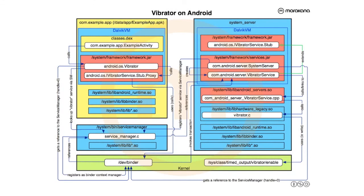Here we have two different processes: an example application on the left and the system server on the right, and down below we have a kernel with a couple of drivers exposed to us. This application wants to vibrate the device — maybe because of a notification, although in that case it would go through the notification service. But let's assume it wants to vibrate the device for some haptic-like feedback. Before we can talk about the application, we have to jump to the right-hand side to talk about the system server, and before that, the service manager — and while we're there, we might as well talk about boot-up.